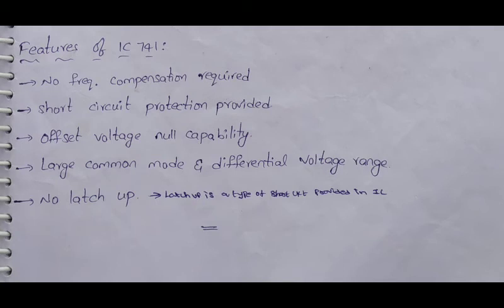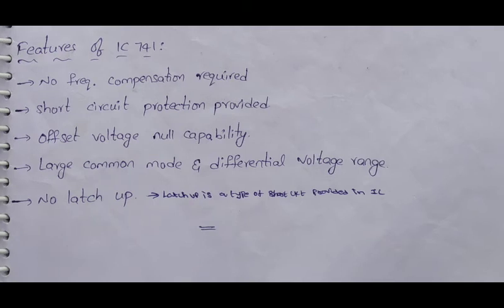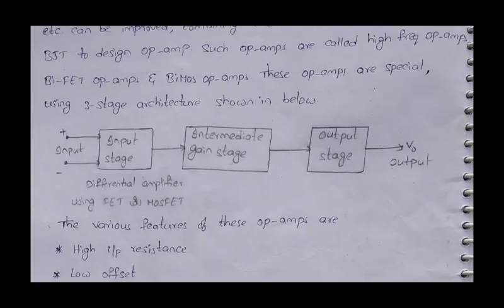Offset null capability is another feature, which refers to nulling the output offset. There is also a large common mode rejection ratio and large differential voltage range. Another feature is no latch-up. Latch-up means a type of short circuit condition in an IC, and IC 741 does not have this problem. These are the key features of IC 741.